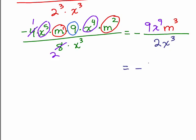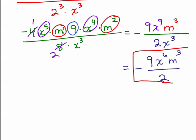And the minus sign. If I subtract in the numerator, I'm going to get x to the 6 m cubed all over 2. Wow. If you did that one correctly, you have got it.